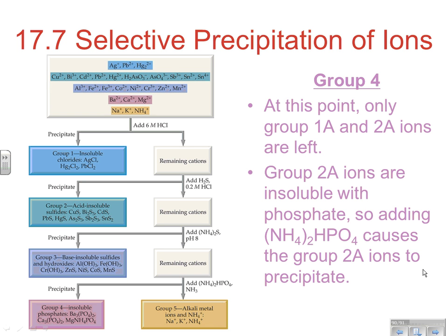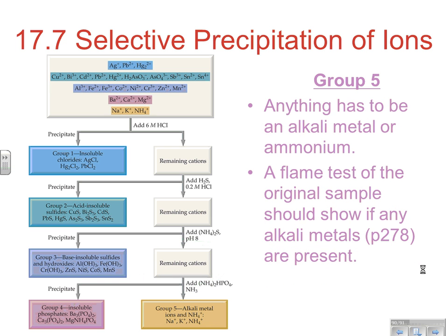Finally, at this point only the group 1A and 2A ions are left — things that are soluble in many situations. Group 2A metals are insoluble with phosphate, so adding ammonium hydrogen phosphate causes the group 2A ions to precipitate, and then we know we have those. So at this point we have group 4 or group 5 things potentially in solution. If we add ammonium hydrogen phosphate and get a precipitate, we know we had one or more things from group 4. The other things — all of our group 1A metals plus potentially ammonium — are still going to be dissolved, because they're soluble in all our situations. Anything left at this point would have to be a group 5, either an alkali metal or ammonium.